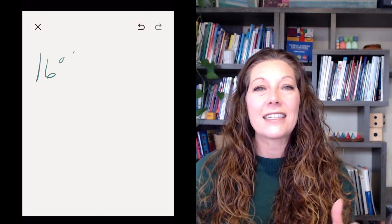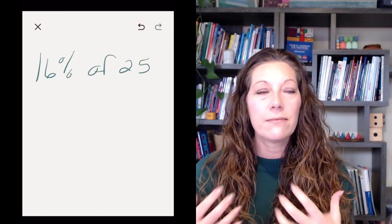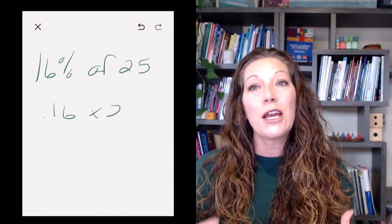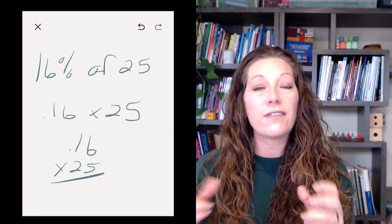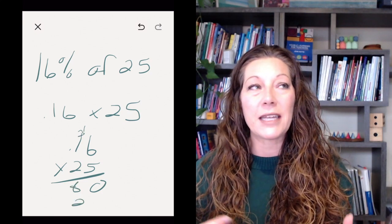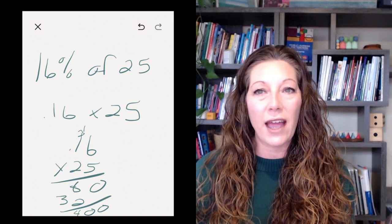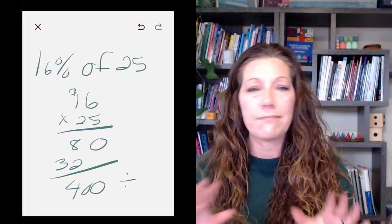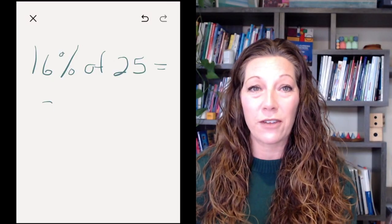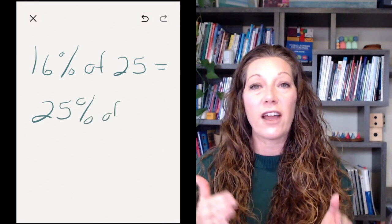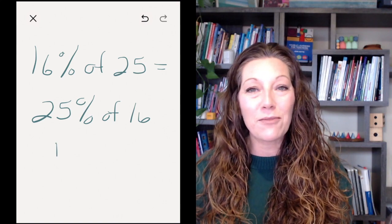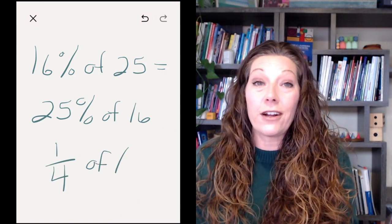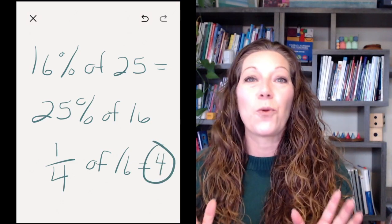Here's the idea. In a problem like 16% of 25, most of us learned that we should turn that percentage into a decimal and that "of" means to multiply. So that problem is basically 16 hundredths times 25. Or you might have learned to just do 16 times 25 and then divide by 100. Either way works. However, did you also know that you could flip the numbers around and instead of doing 16% of 25, you can think of it as 25% of 16? And 25% of 16 means you take a quarter of 16, which is 4 — way easier to do in your head.